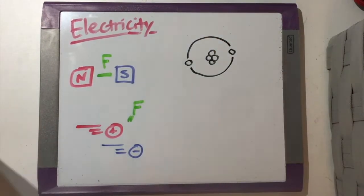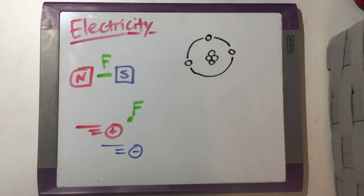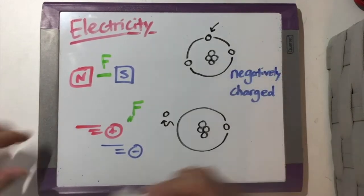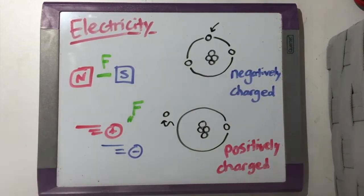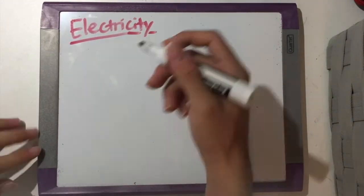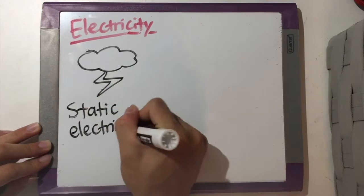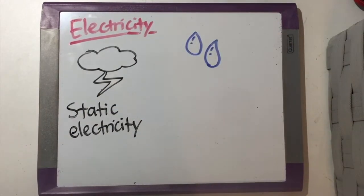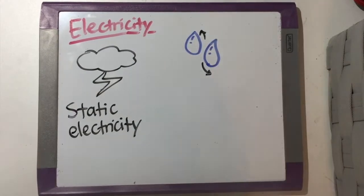Atoms can either gain or lose electrons, which makes them negatively or positively charged, respectively. The presence and movement of those charged particles create electricity. For example, take lightning. Lightning is caused by a type of electricity called static electricity. The water droplets and ice crystals inside clouds rub against each other, which makes them either positively charged or negatively charged.